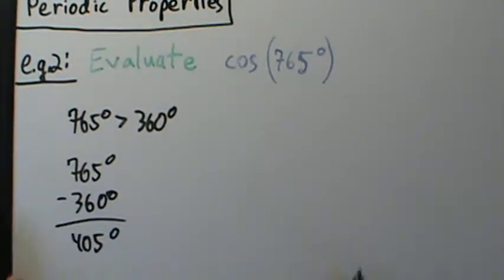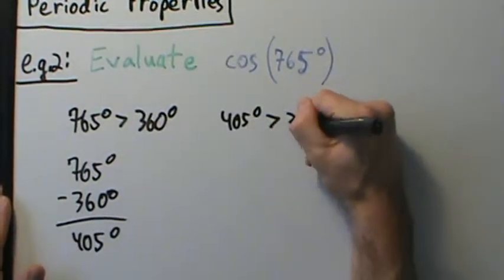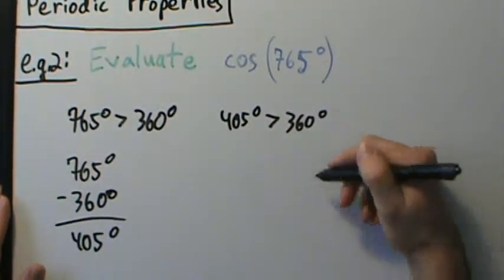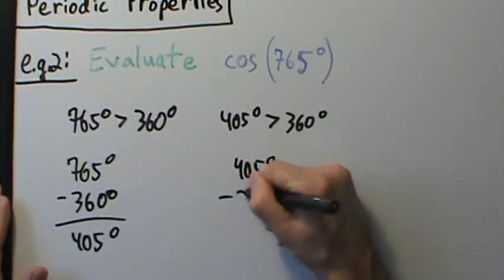Now, notice though, 405 degrees, that's still larger than 360 degrees, right? So we have to subtract 360 again. So 405 degrees minus 360 degrees.